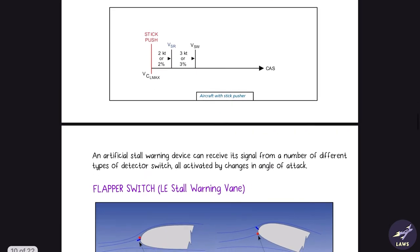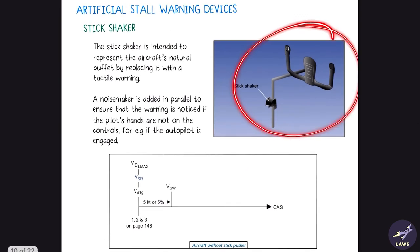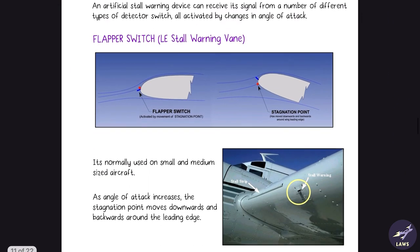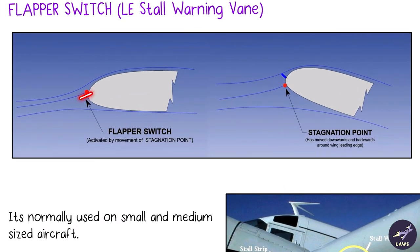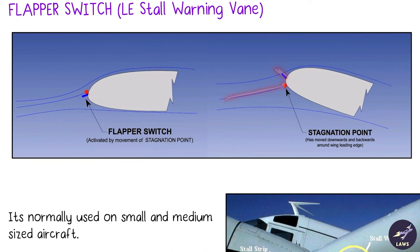Input to the stick pusher and stick shaker is given by a couple of devices. The first is the flapper switch, normally used in small and medium-sized aircraft. This switch is activated by the movement of the stagnation point. As angle of attack increases, the stagnation point moves down, activating the switch, which then signals the stick pusher or stick shaker that the critical angle of attack has been approached and stall is imminent.